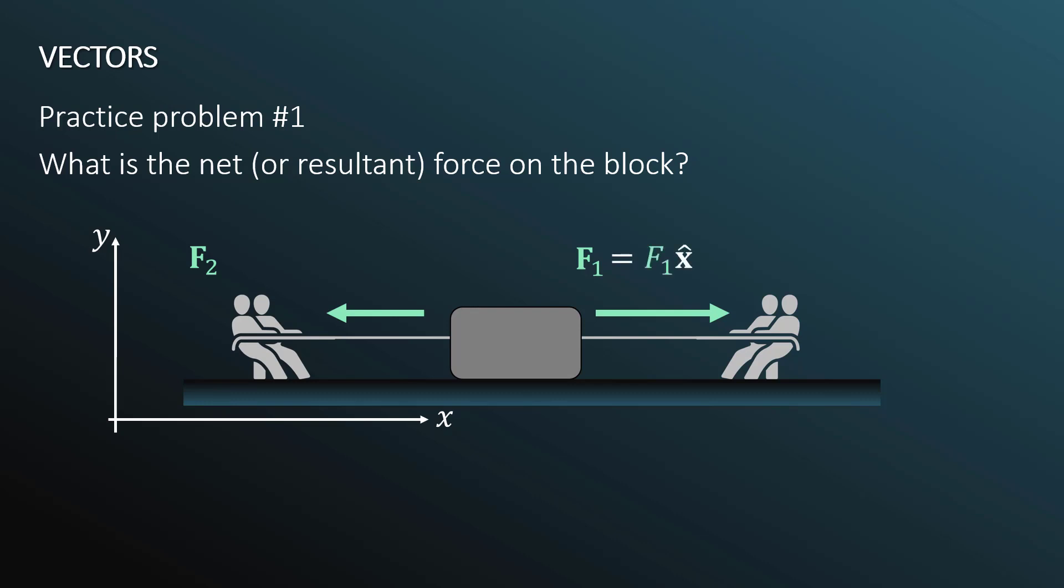So f1 vector equals f1 value, multiplied by this x hat, which is technically a unit vector, but we're just going to consider it as an indicator of the direction that the value is pointing. Using the actual value from the previous slide, we see that this is 10 newtons in the positive x direction. So don't let this x with the hat over it throw you off. We are just using it to indicate a direction.